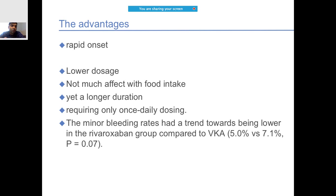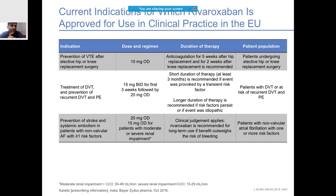In statistics comparing minor bleeding rates between rivaroxaban and dabigatran, the minor bleeding rates are much better for rivaroxaban. In fact, if you encounter an ischemic patient or a stroke patient with ischemic etiology, rivaroxaban should be preferred. Rivaroxaban has been used for venous thromboembolism, deep vein thrombosis treatment and recurrence prevention, and also for prevention of stroke and systemic embolism.